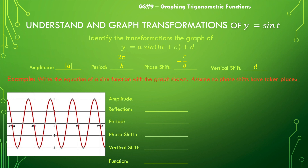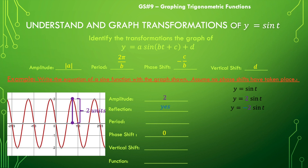Here's another example — let's go through it a little quicker. The amplitude is the distance from the midline to the maximum, which is 2 units. Now, does this have a reflection? Since there is no phase shift, I look at the y-axis and notice the graph is going down to a valley before it goes up to a peak, which means yes, there is a reflection. We'll add that negative to the coefficient of sine of t.